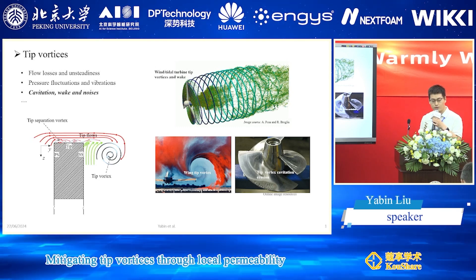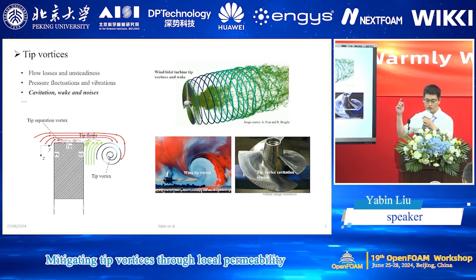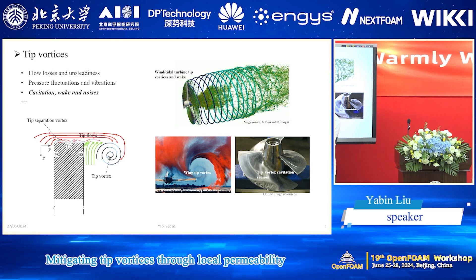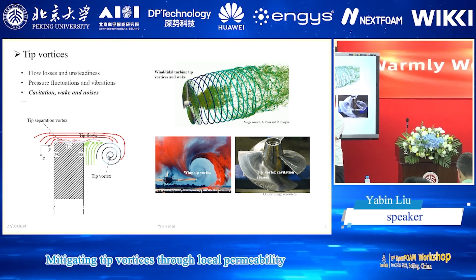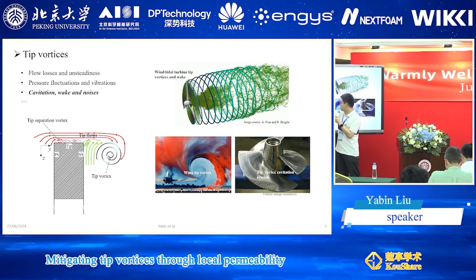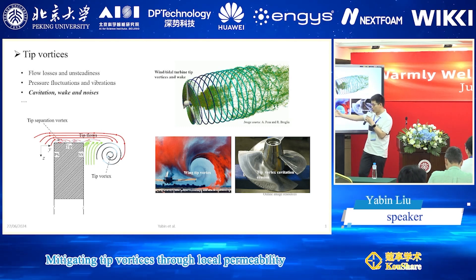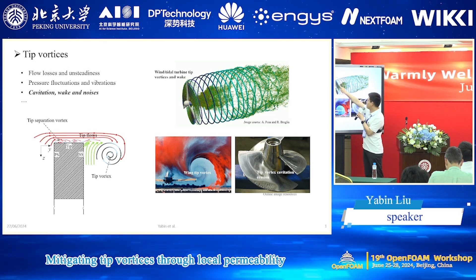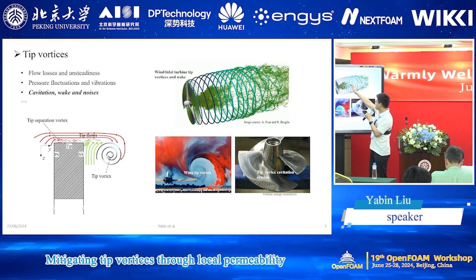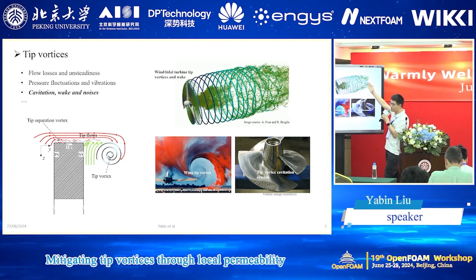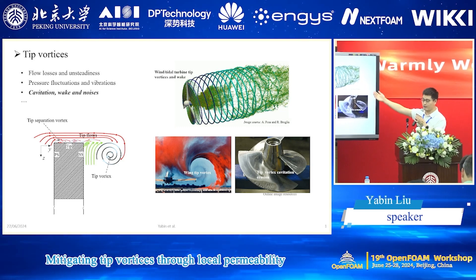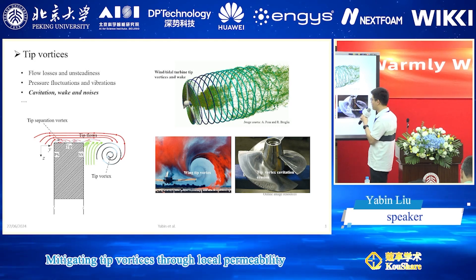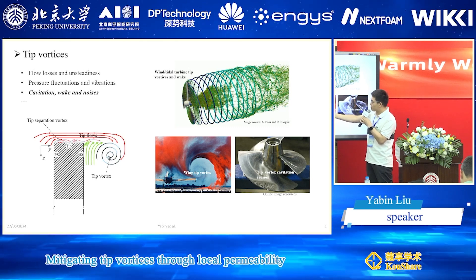I would like to introduce the background. My research is on tip losses. Tip losses are driven by the pressure difference between the pressure side and suction side of a blade or a wing. There will be two flows that go up from the blade tip and then enroll into this large-scale vortex structure. It's a longstanding and common problem. For example, a wind turbine or tidal turbine — we see this tip vortex structure generated and propagated downstream, generating wake that interacts with downstream turbines.